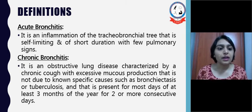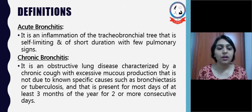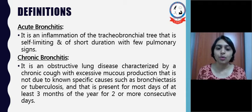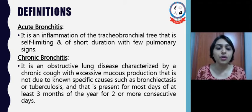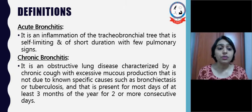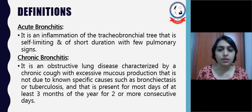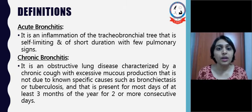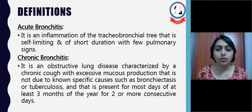Chronic Bronchitis: it is an obstructive lung disease characterized by a chronic cough with excessive mucus production that is not due to known specific causes such as bronchiectasis or tuberculosis, and that is present for most of at least 3 months of the year for 2 or more consecutive years. So the symptoms may repeat almost 3 months of every year for more than 2 to 3 consecutive years before we can describe it as chronic bronchitis.